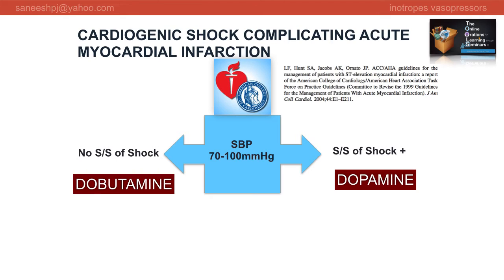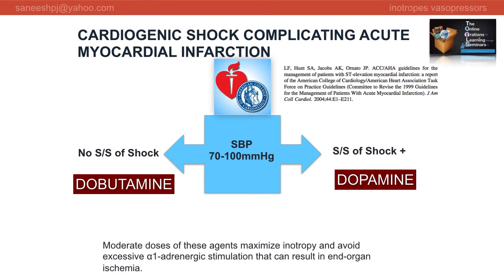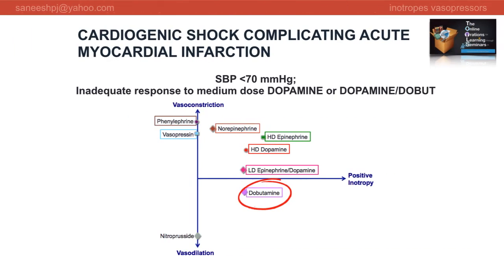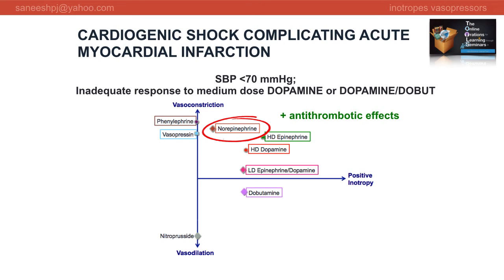Moderate doses of combinations of dopamine-dobutamine may potentially be more effective than maximal doses of any individual agent. When response to a medium dose of dopamine or dopamine-dobutamine combination is inadequate, or the patient's systolic blood pressure is less than 70 mmHg, the use of norepinephrine has been recommended. With an antithrombotic effect in addition to its pressure qualities, norepinephrine may be the optimal choice under these conditions.